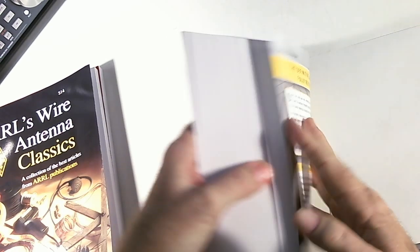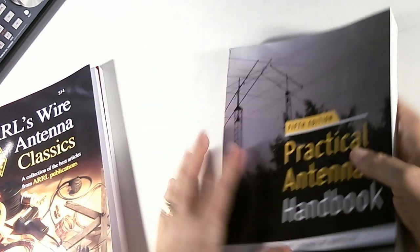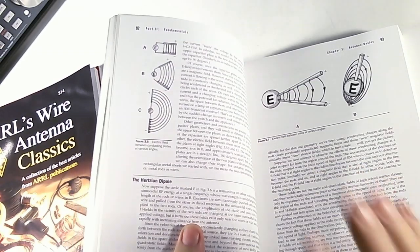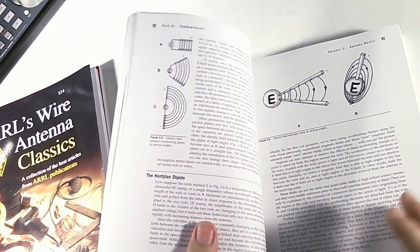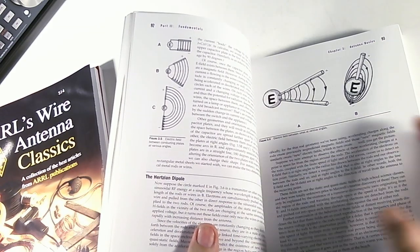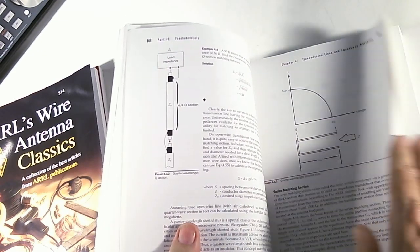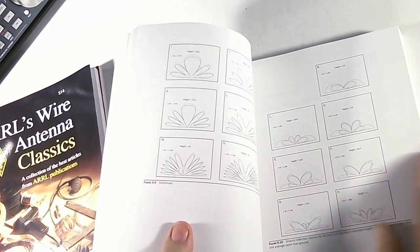Now this one is a fairly thick book, 765 pages, a big book. This is on antenna theories, how antennas work, how different antennas work, and it's just loaded with theory information about antennas.